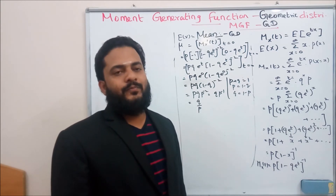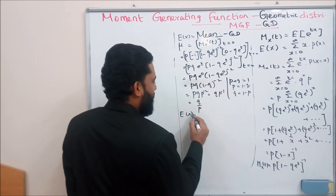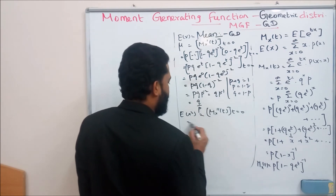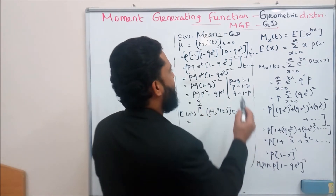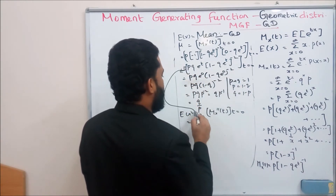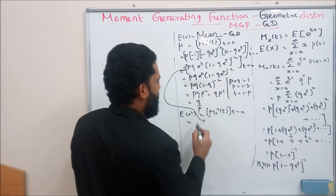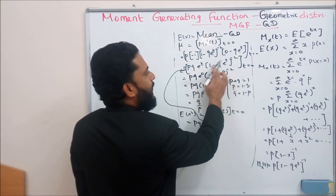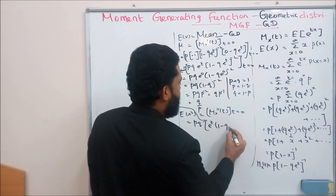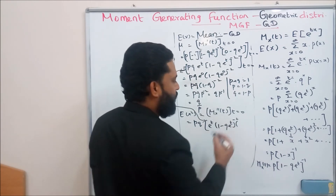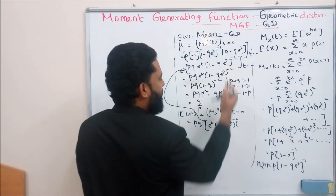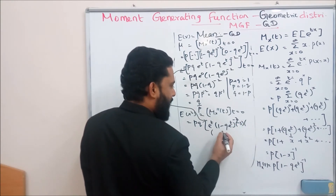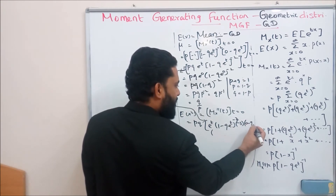To find the variance, we need E[X^2] = mx''(t) evaluated at t=0. Finding the second derivative from mx'(t) = p*q*e^t*(1-qe^t)^(-2): p and q are constants. Keeping e^t as is, find the derivative of (1-qe^t)^(-2): bring down -2, giving (1-qe^t)^(-3), multiplied by -qe^t.